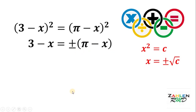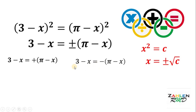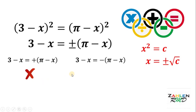Therefore, we have 2 cases. The first case is 3 minus x equals positive pi minus x, and the second case is 3 minus x equals negative pi minus x. In the first case, we already know this is not correct because it gives us pi equals 3. In solving quadratic equations we have 2 possible solutions, but not all are valid — there are times we get an extraneous solution. An extraneous solution is a solution that emerges from the process of solving the problem but is not a valid solution. So we can say that in the first case, we got an extraneous solution.